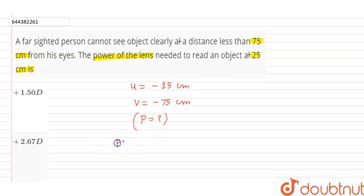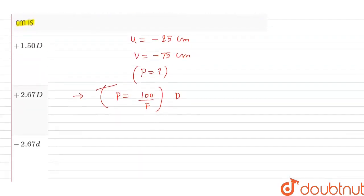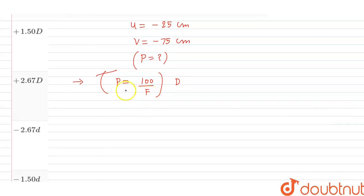We know that power of the lens formula P equals 100 divided by f, where f is the focal length of the lens in diopter. So first we need to find focal length of the lens.